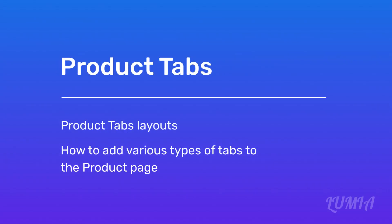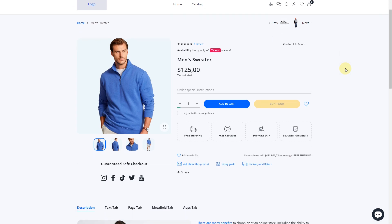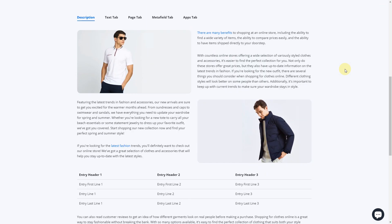Product tabs layouts — how to add various types of tabs to the product page. There are two tab designs in the Lumia theme: inner tabs and outer tabs.